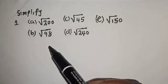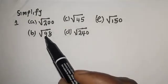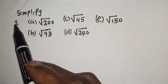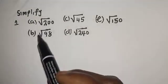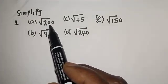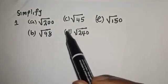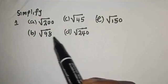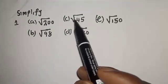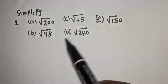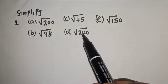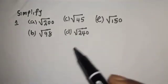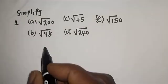In today's class we're going to consider the following examples: simplify (a) square root of 200, (b) square root of 98, (c) square root of 45, (d) square root of 240, and (e) square root of 150.